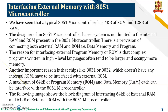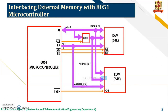The following image shows the block diagram of the 8051 microcontroller interfacing with external RAM and external ROM memory. In this diagram you can see that the 8051 microcontroller has to be interfaced with RAM memory and ROM memory. The size of RAM memory is maximum 64 KB and size of ROM memory is maximum 64 KB.